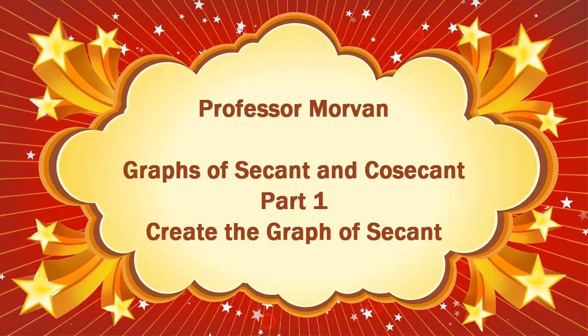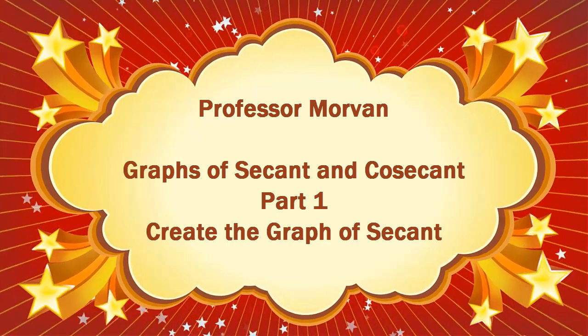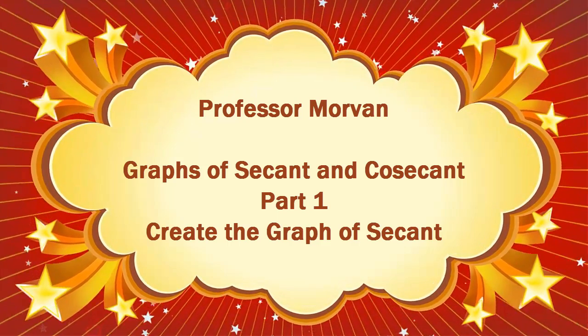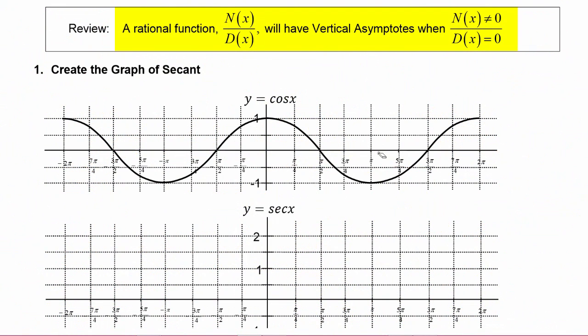In part one of our lesson on graphs of secant and cosecant, we will create the graph of secant. A quick reminder that a rational function written in the form of N over D will have vertical asymptotes when N, the numerator, does not equal zero at the places where D of x, the denominator, does equal zero.